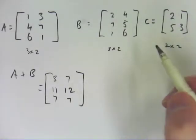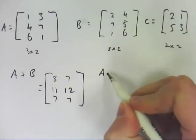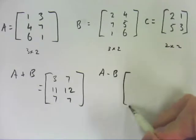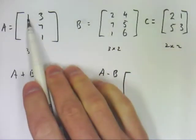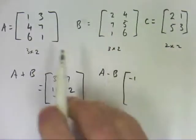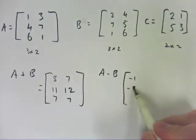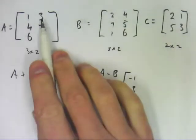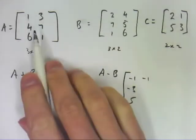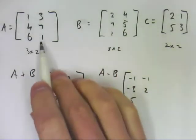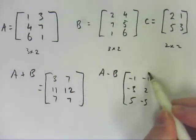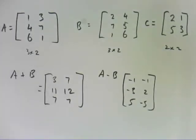If I were to do subtraction, it's the same process. So if I do A minus B, all we do is we go 1 minus 2, 4 minus 7, 6 minus 1, 3 minus 4, 7 minus 5, and 1 minus 6. So adding and subtracting matrices is really quite simple.